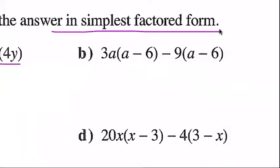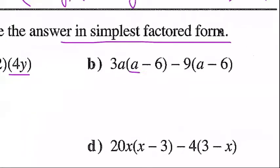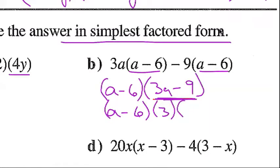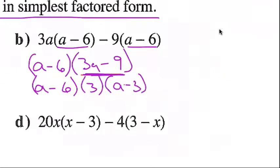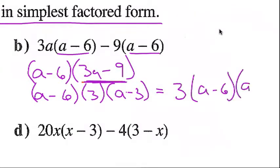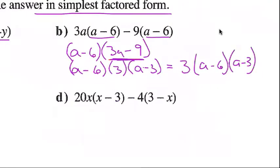Question b: 3a(a − 6) − 9(a − 6). You can see (a − 6) is a factor. Factoring it out leaves me with 3a − 9. But both 3a and 9 divide by 3, so I can factor out a 3, giving me (a − 6) · 3(a − 3). Generally we write the monomial at the beginning of our factors: 3(a − 6)(a − 3).